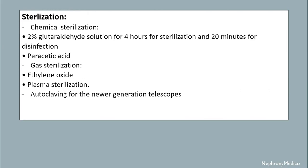Sterilization. There may be chemical sterilization, gas sterilization, or autoclaving for the newer generation telescopes. In chemical sterilization, 2% glutaraldehyde solution is used for 4 hours for sterilization and 20 minutes for disinfection; peracetic acid may also be used. In gas sterilization, ethylene oxide and plasma sterilization is used.